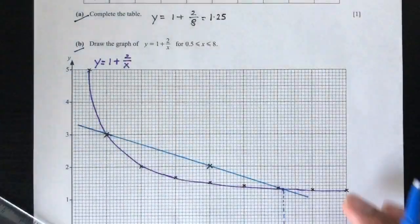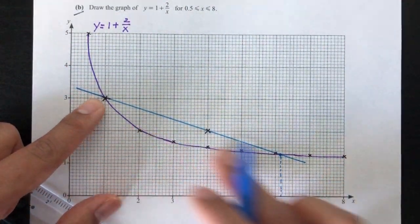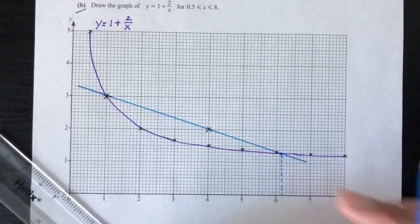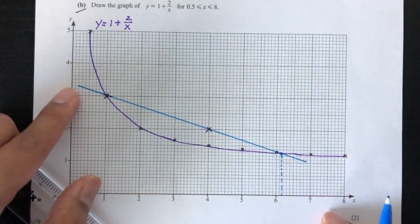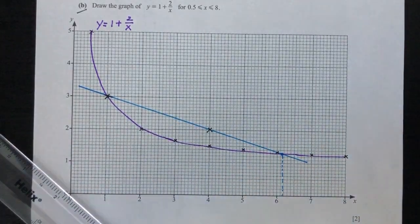But now usually, if your graph is perfectly drawn, if this line is perfectly straight, you should get 6. But the method is what counts. This is what you need to be doing to get this value as your answer.